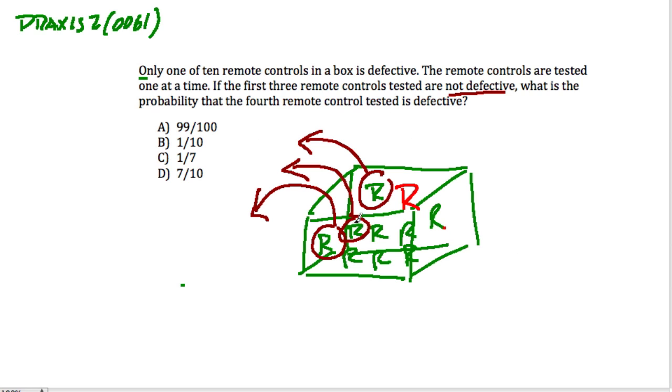Well, we're taking these remote controls away and we're not replacing them, I assume. And the way that they are phrasing this problem, it sounds like we're not replacing them. They don't mention that. So what's left are seven remotes. And when we analyze this probability, we can change it and say, well, now there's a one in seven chance that a remote is defective.